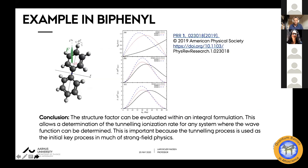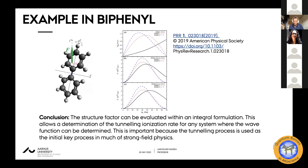It's possible to go to very big systems. For someone like me who started out in atomic physics, biphenyl is a big system. In this particular case, the field points in the positive z direction and biphenyl consists of two benzene rings. We calculated the ionization rates as a function of the angle between the two benzene planes — the dihedral angle — and also the structure factor. The structure factor can now be evaluated with this integral formulation, allowing determination of the tunneling ionization rate for any system where the wave function can be determined by quantum chemistry methods. This is important because tunneling is still used as an initial key step in much of strong-field physics.